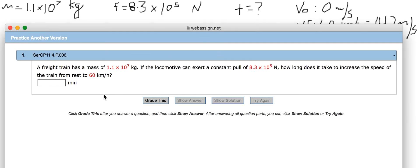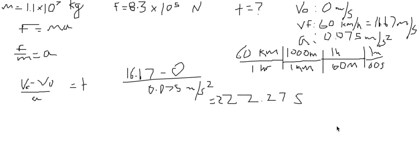And the answer is asking for minutes, so we divide by 60, 60 seconds in a minute. And we end up getting a value of 3.70 minutes. So it takes 3.7 minutes for the train to reach 60 kilometers per hour from zero.